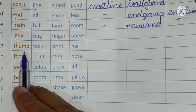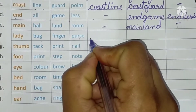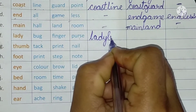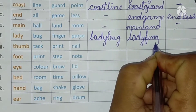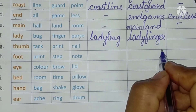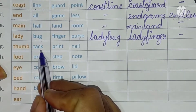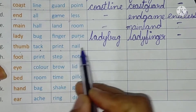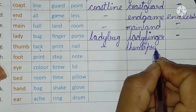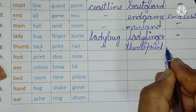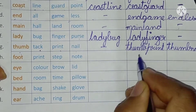Next is 'lady': ladybug, lady finger, or lady purse. Yes, we can write ladybug and lady finger. Lady purse — no, leave blank. Next is 'thumb': thumbtack, thumbprint, or thumbnail. Thumbtack — no. Thumbprint — yes. Thumbnail — yes.